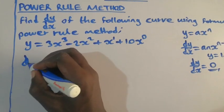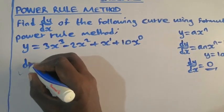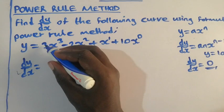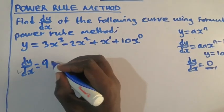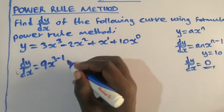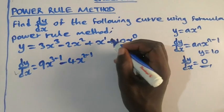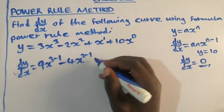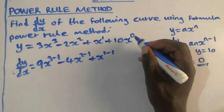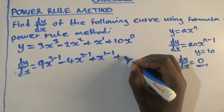So dy/dx will be equal to 3 times 3, which is 9x, then 3 - 1. 2 times -2, which is -4x, then 2 - 1. 1 times x, which is positive x, then 1 - 1. 0 times 10x, which is 0.